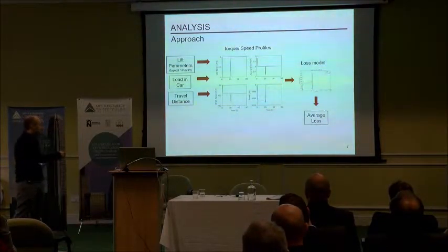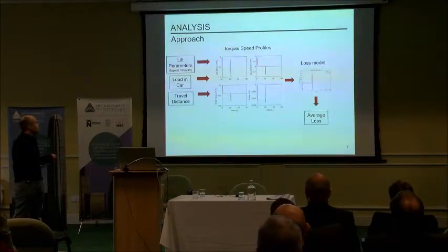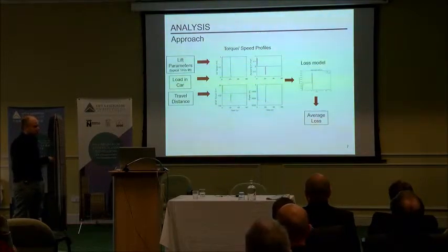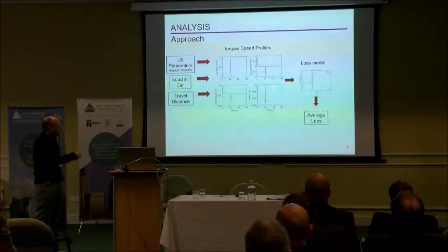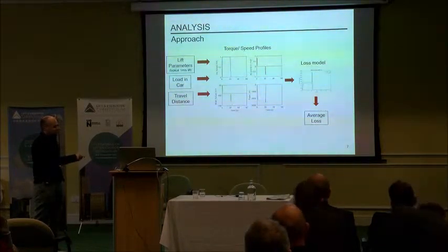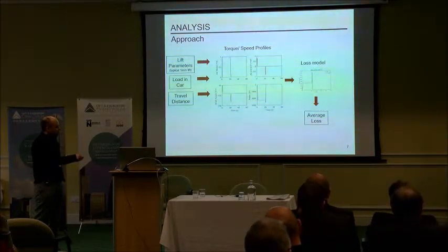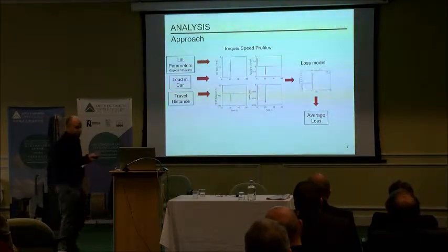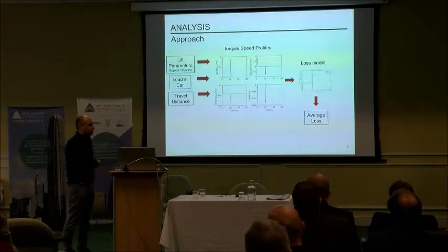I use just one example lift — a low-rise elevator. I look at a distribution of loads in cars and a distribution of travel distances. For each condition, I calculate torque-speed versus time profiles, then apply a loss model to get a loss versus time curve. Then I simply take the average to get an average loss, and compare the two average losses to see what the difference is.